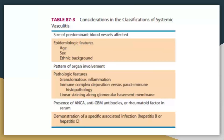Think about who your patient is — ethnic background can be very important, for example the Silk Road for Behçet's. Pattern of organ involvement is extremely important — I would argue it's probably the most important factor. That usually comes later after you're able to get the biopsy. Also think about what other disease processes the patient has — think about cryoglobulinemia. If they have hepatitis B, think about PAN.